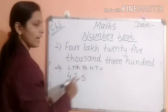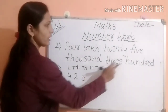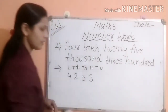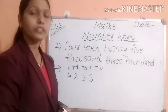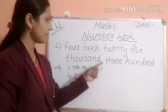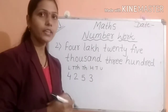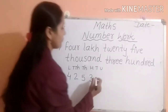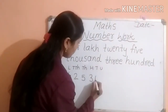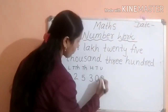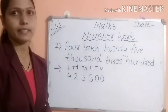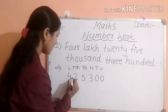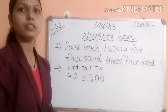Three hundred. How many are hundreds? Three. There is no number at tens place and units place, so what shall we do here? We have to put zeros on those places. So the number is four lakh twenty-five thousand three hundred — 4,25,300.